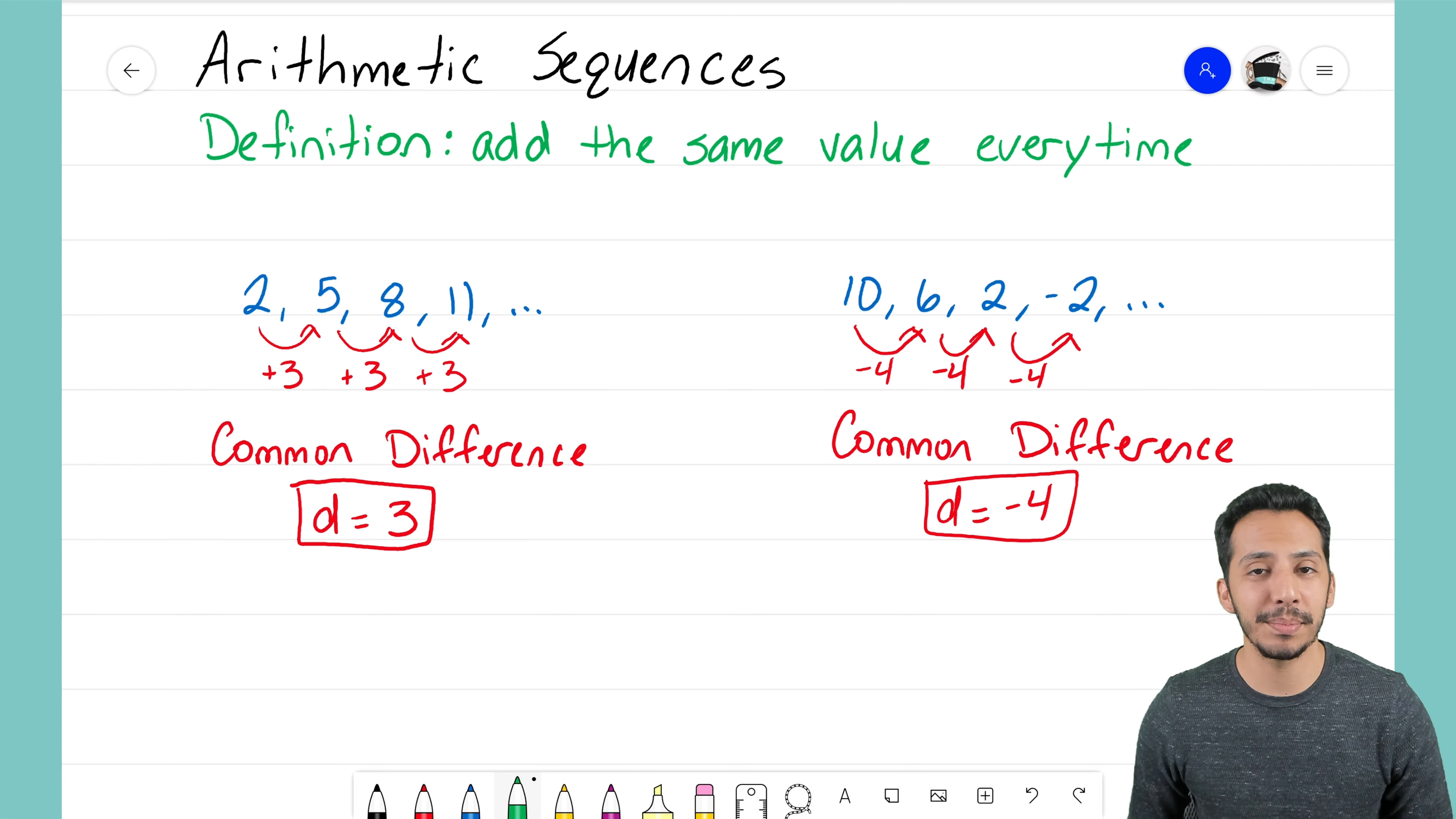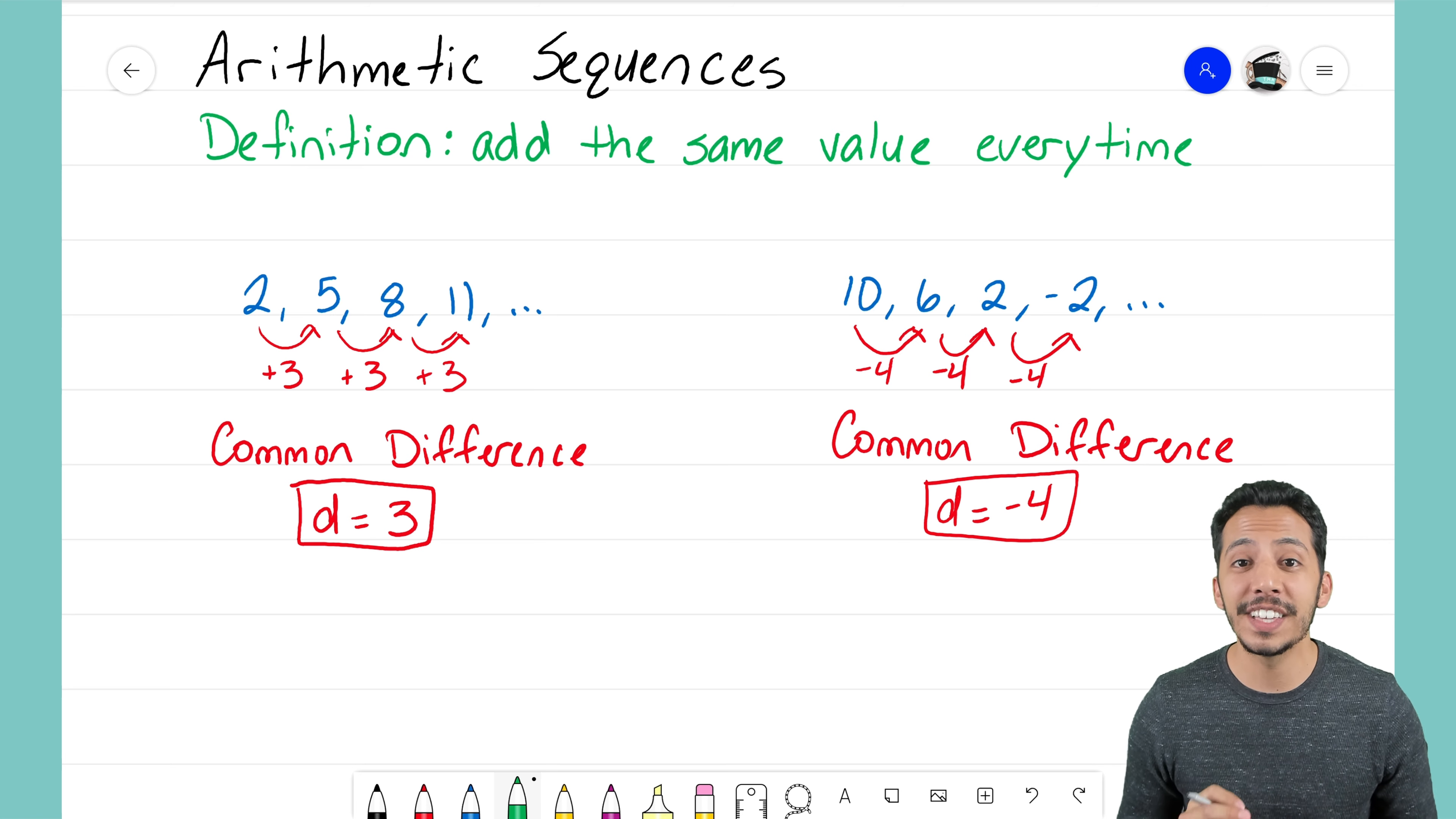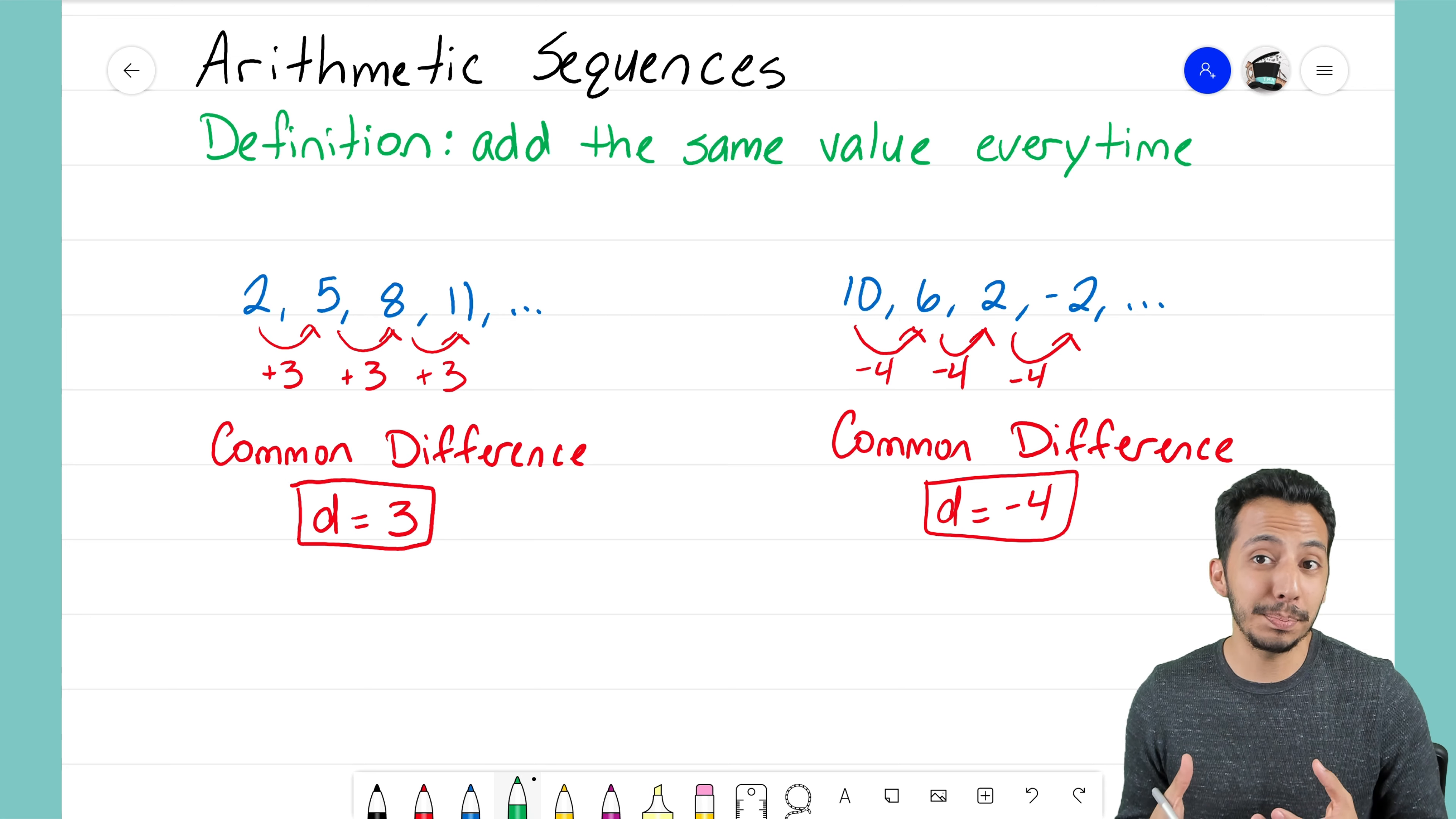Hey everyone, it's that math magician. In this video we're going to take a look at arithmetic sequences and we're going to determine how to find the zero term in any arithmetic sequence you have. Now the zero term is basically what it sounds like.